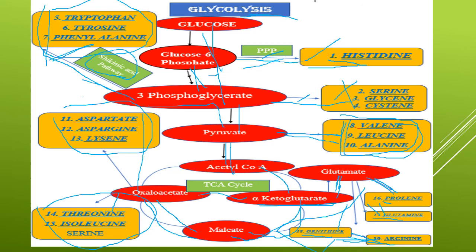Pyruvate is converted to acetyl-CoA and enters into the TCA cycle. The first intermediate of the TCA cycle is alpha-ketoglutarate, and from there glutamate is obtained. This glutamate is converted to four different amino acids: proline, glutamine, and ornithine, and from ornithine, arginine is also obtained. Then alpha-ketoglutarate is converted to malate, then oxaloacetate, and from oxaloacetate: aspartate, asparagine, lysine, threonine, isoleucine, and serine are biosynthesized. That is about the amino acid pathway.